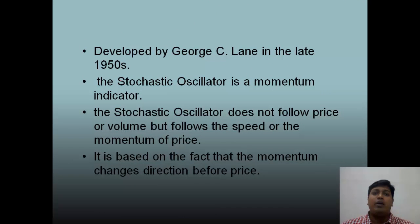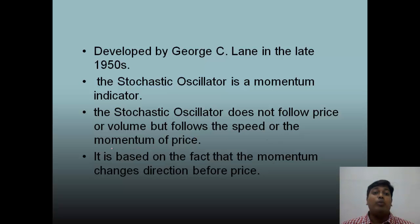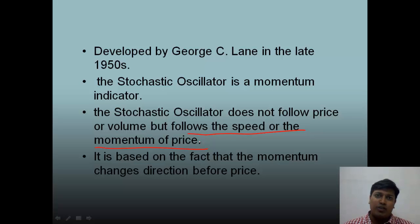Stochastics was developed by George C. Lane in the late 1950s. The stochastics indicator is a momentum indicator — it does not follow the price or the volume, but follows the speed or the momentum of the price. It is important to remember this when you are designing a system or a process to trade stochastics.